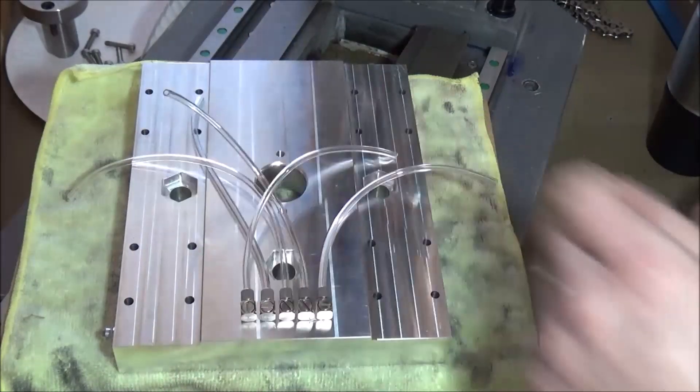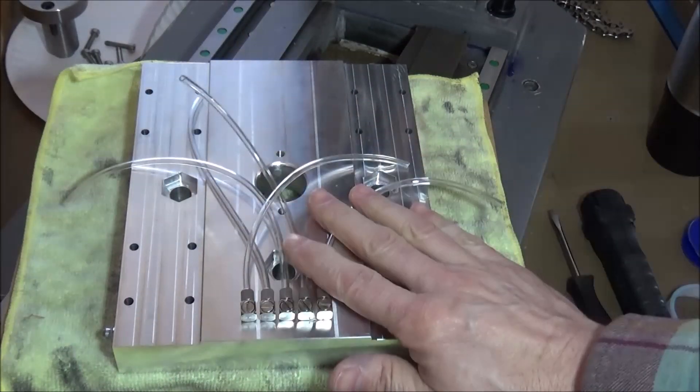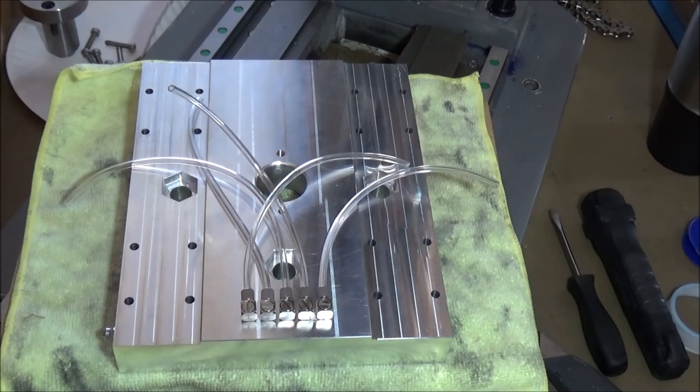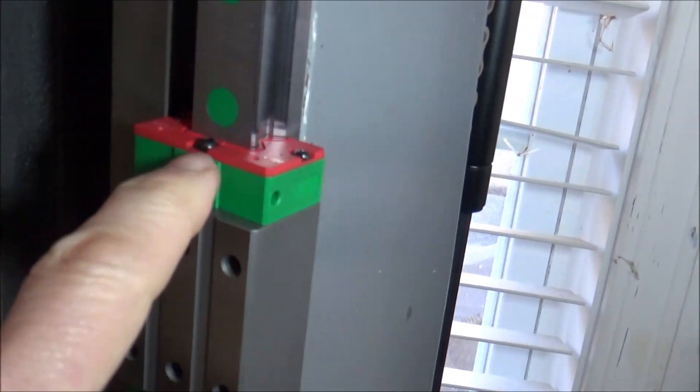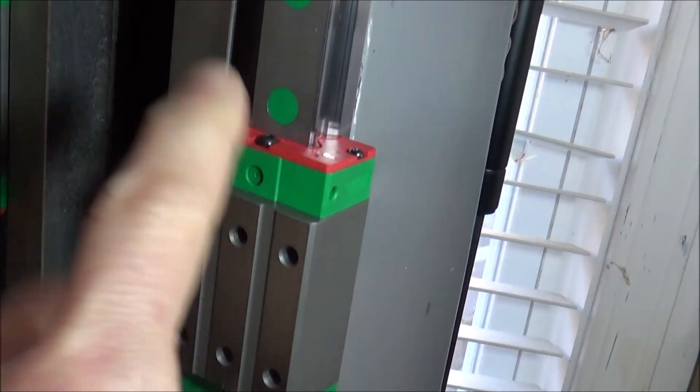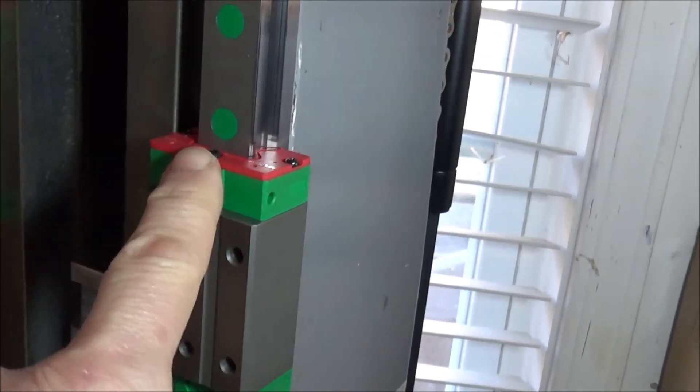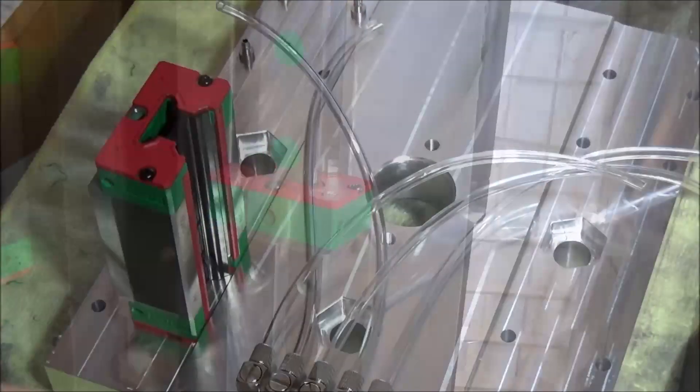All right, so now that we have all these plumbed in, I need to concentrate on getting the fittings mounted on my linear blocks. So I'm going to just remove these and see if I can't tap this out to M5 and get some fittings on.